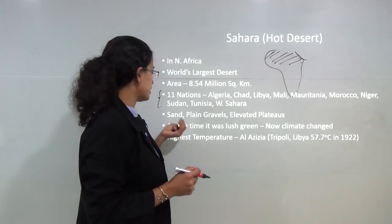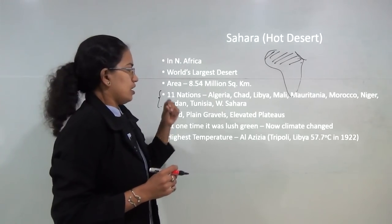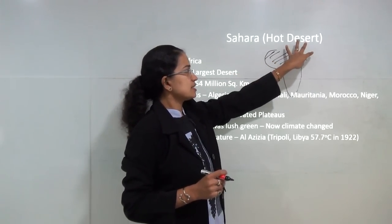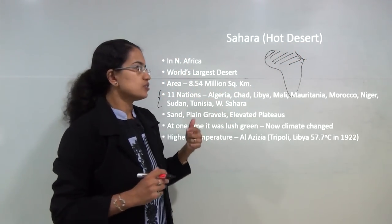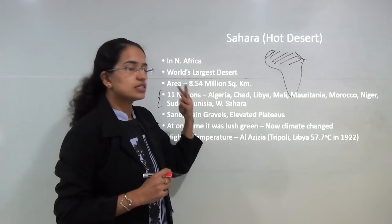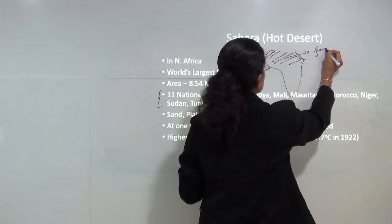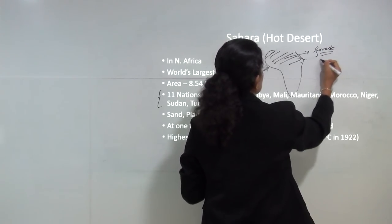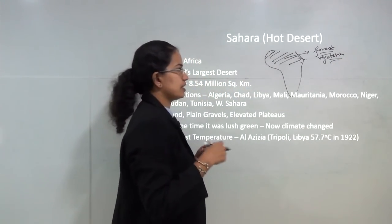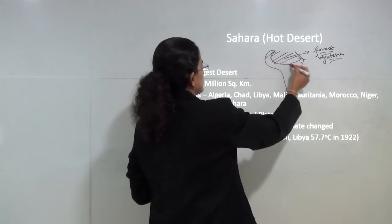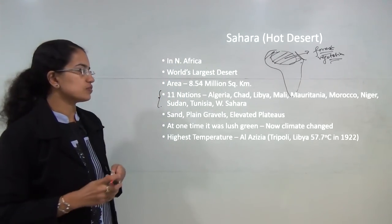The topography here is mainly sand with plain gravels and elevated plateaus in a few areas. This has been a result of climate change that has taken place over the years. Millions of years back, this area was a lush green forest region with very good vegetation, but with changes in climate over the years, this region turned into a desert area.